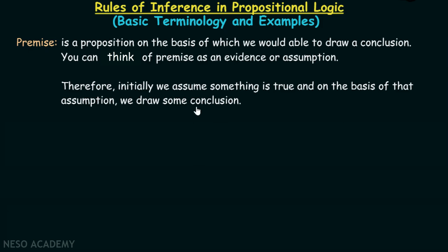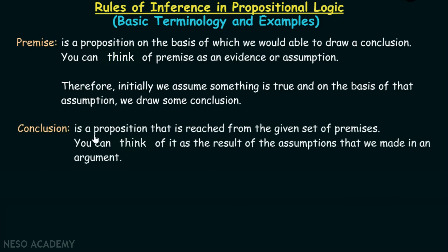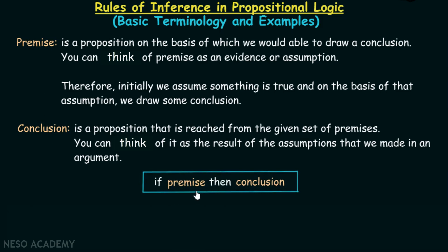Now what is the meaning of conclusion? Conclusion is a proposition that is reached from the given set of premises. You can think of it as the result of the assumptions that we made in an argument. To summarize these two terms: if the premise is true, then the conclusion has to be true.